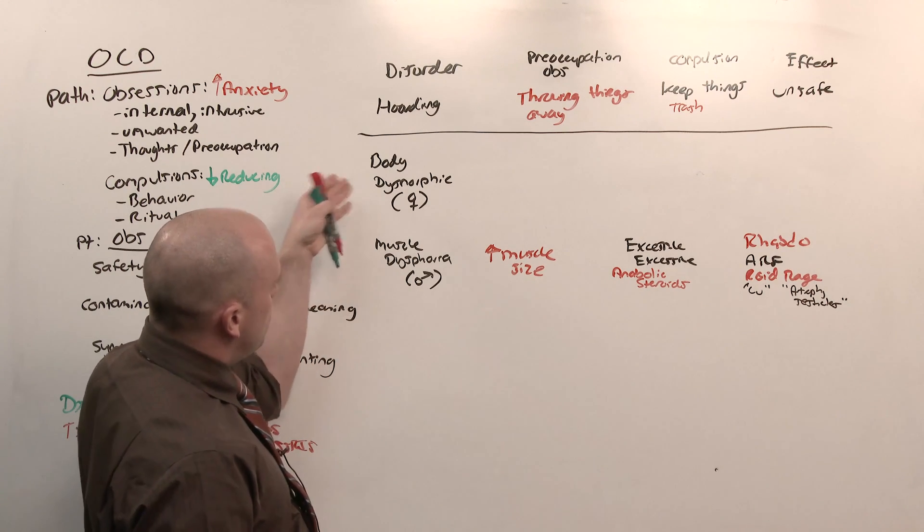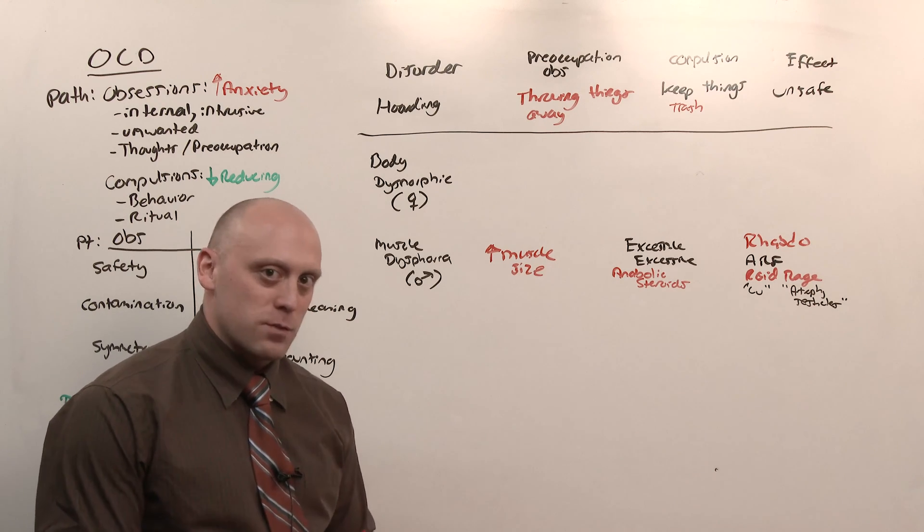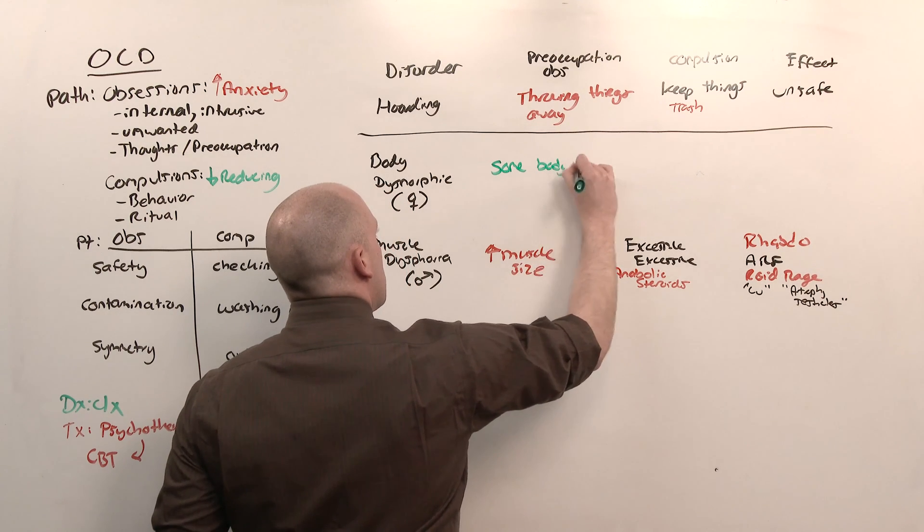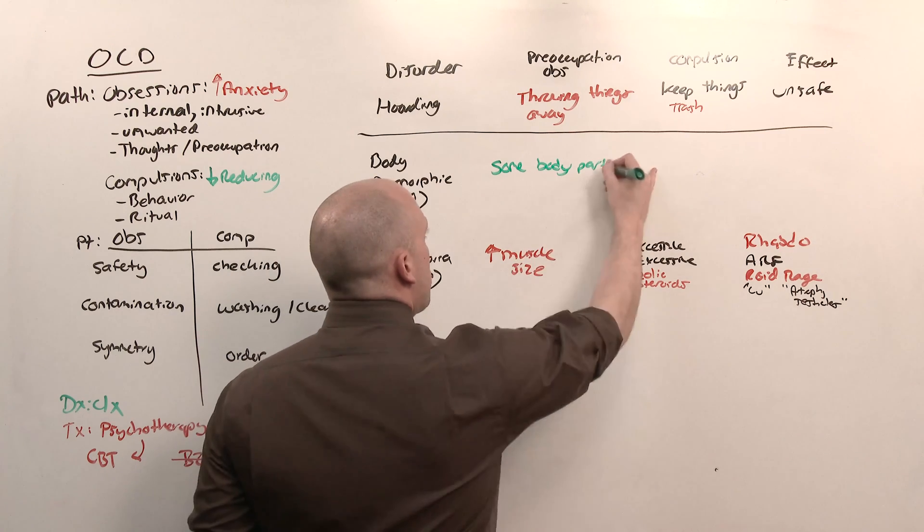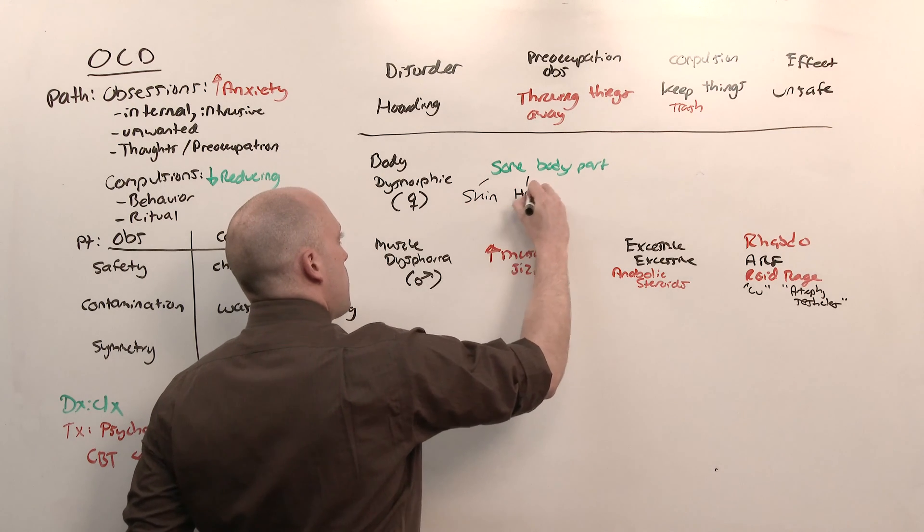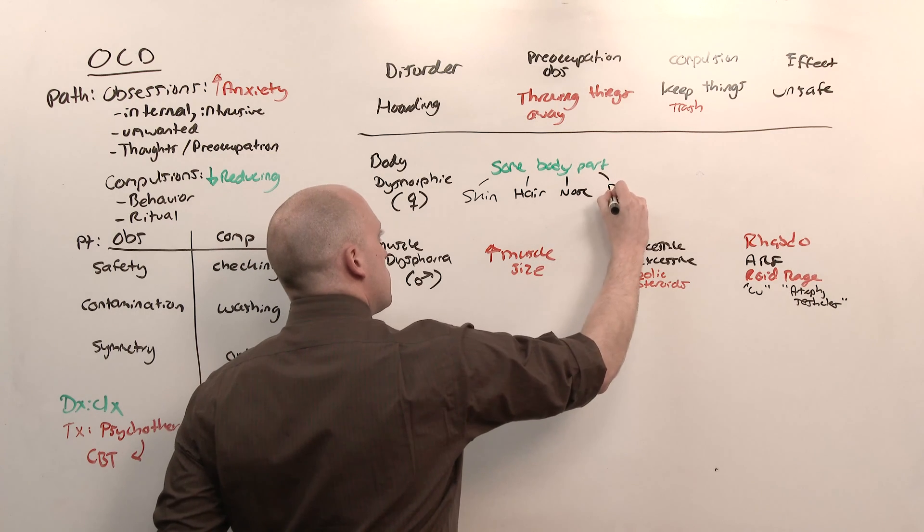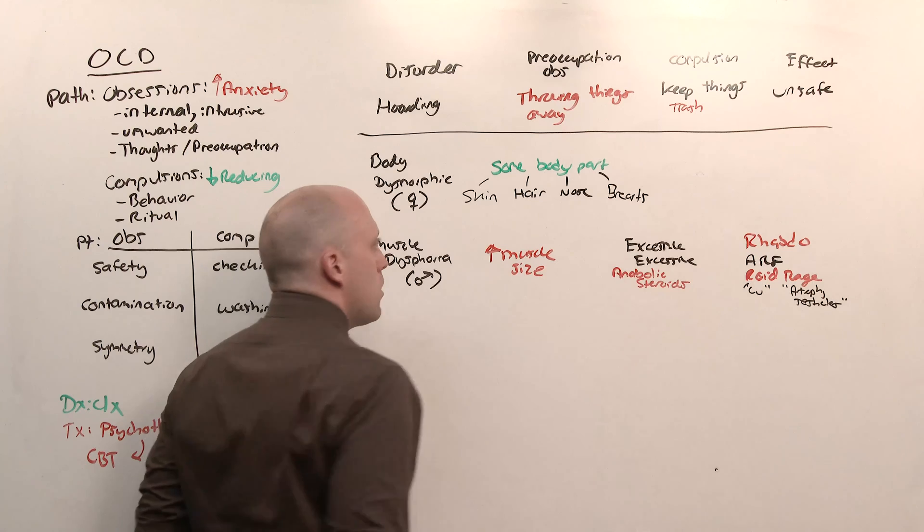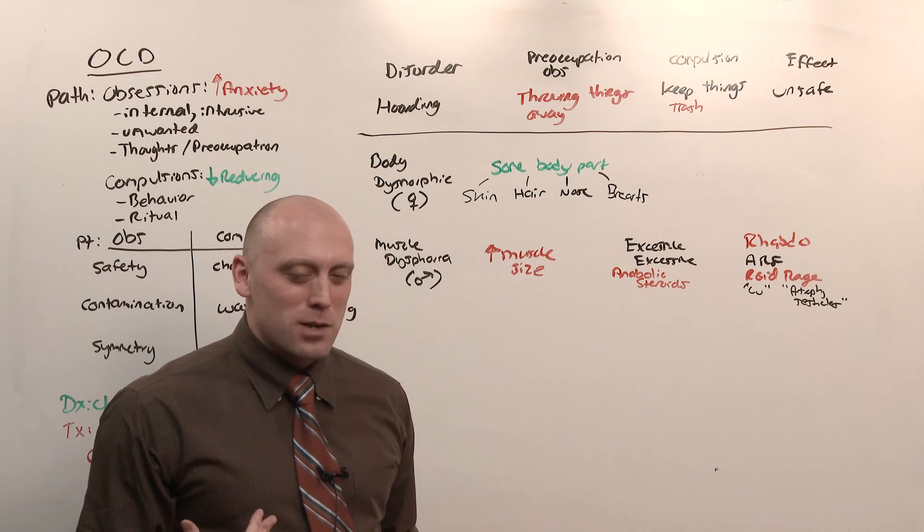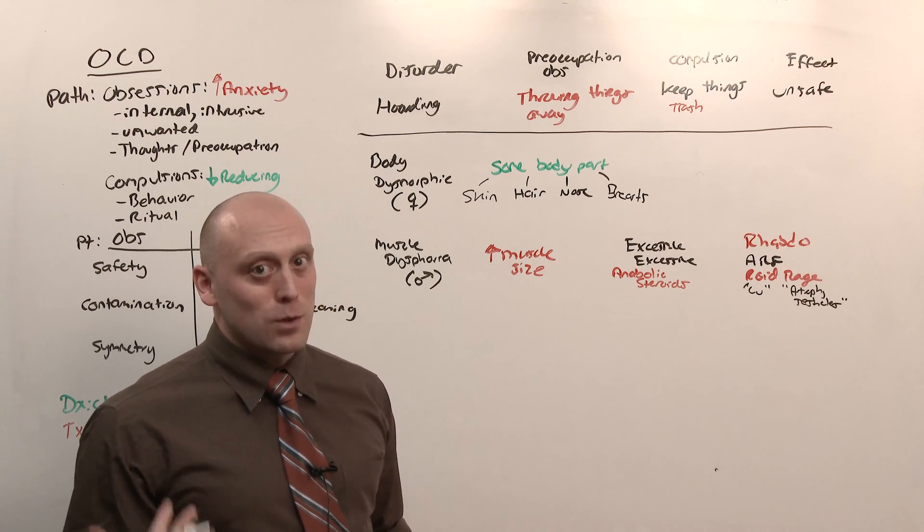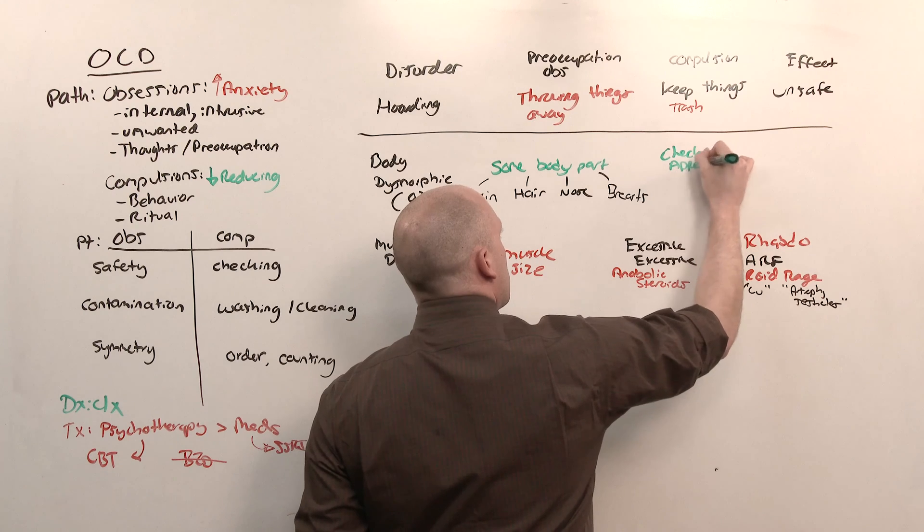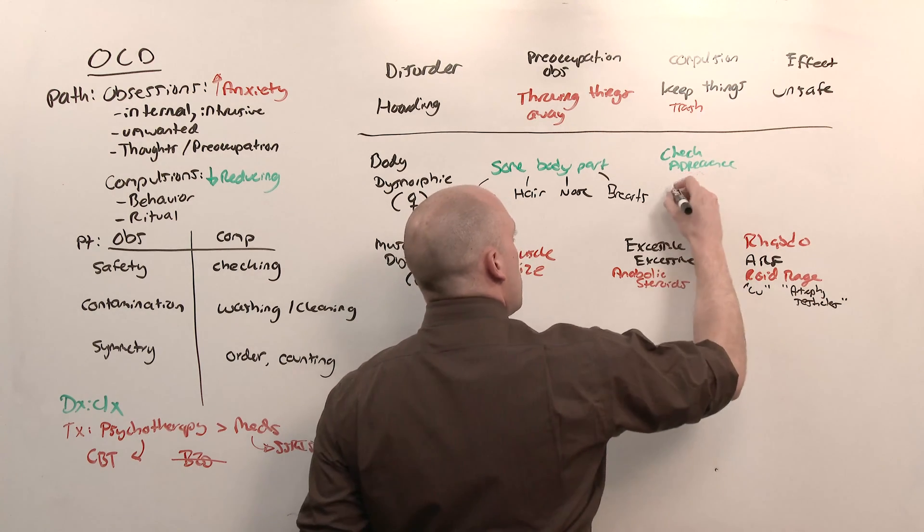The equivalent in women is body dysmorphic disorder. And this diagnosis really has not changed from DSM-4 to 5. It is going to be a preoccupation with some part of the body. And it is often going to be some part of the body that is usually associated with beauty or attractiveness. Skin, hair, nose, breast. These women are going to be preoccupied with the fact that they don't look good. That something's wrong. Asymmetry. It's an ugly body part, even though it's relatively normal. They will be compelled to check their appearance.